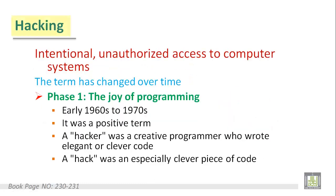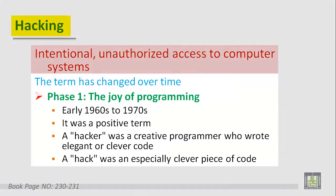Hacking, which is the intentional unauthorized access to computer systems, has changed over time. There are three phases of the term hacking. The first phase, which is the joy of programming, started in the early 1960s and continued to the 70s. This term referred to a positive thing — a hacker was a creative programmer who wrote elegant or clever code.